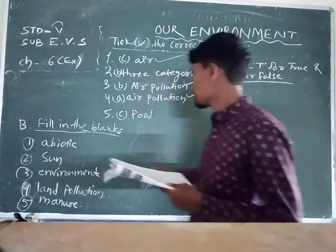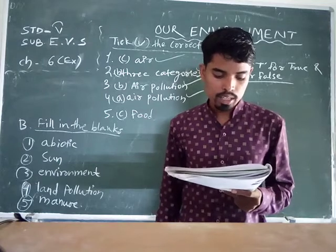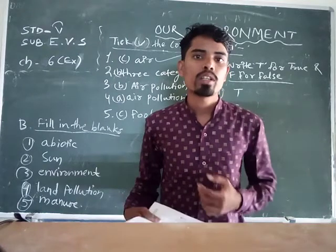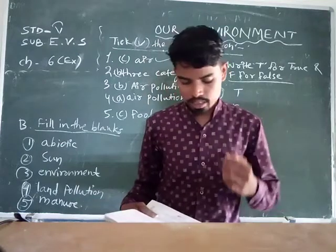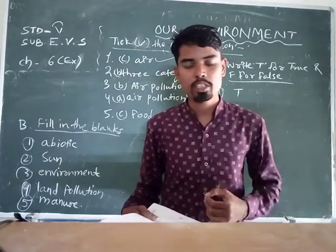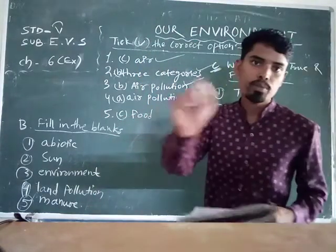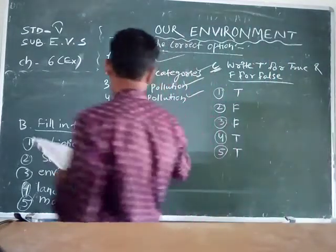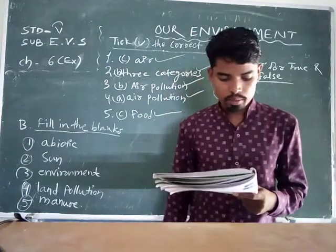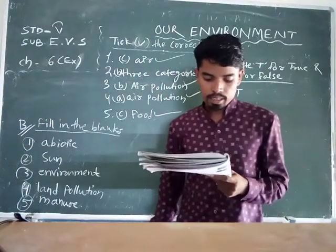Number three: plants provide food for animals. Animals depend on plants for their food. So the correct answer is food — animals depend on plants for food.